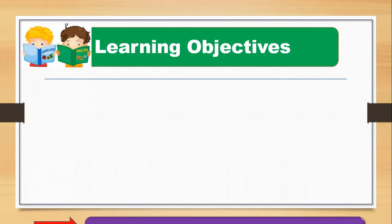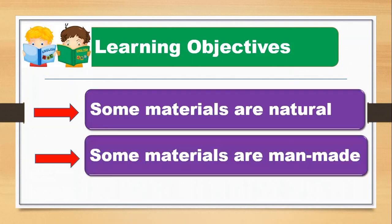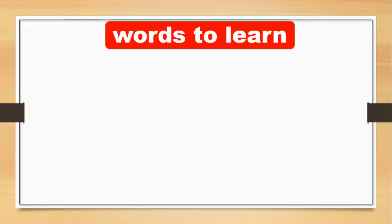Today we discuss lesson number four: other natural materials, page 22 to 23. The learning objectives are: some materials are natural and some materials are man-made. We will discuss different types of materials that are natural and man-made. There are two types: natural, which come from nature, and man-made, which man produced and created.